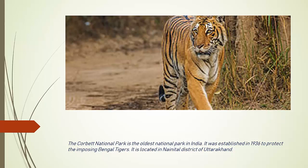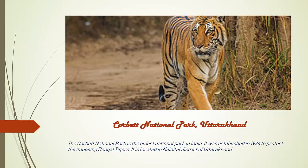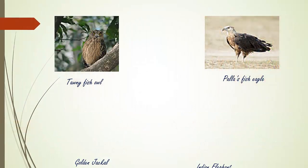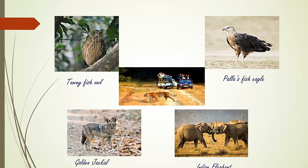Starting with Corbett National Park. Corbett National Park is located in Uttarakhand, in the Nainital district. It is one of the oldest national parks in India, established in the year 1936. Examples of animals found in Corbett National Park include the Brown Fish Owl, Pallas's Fish Eagle, and Indian Elephant.